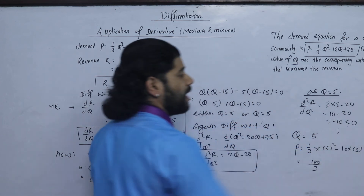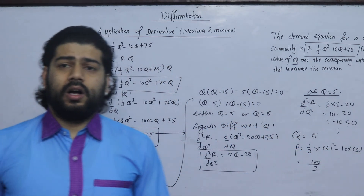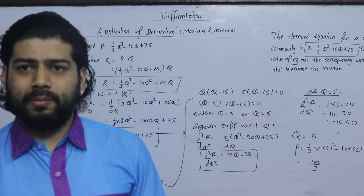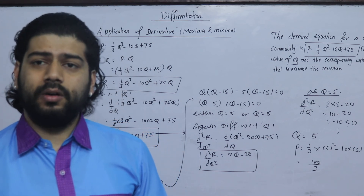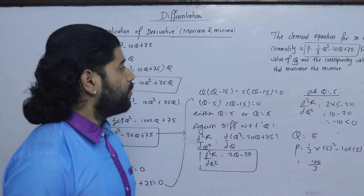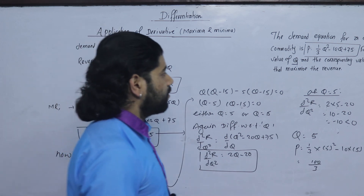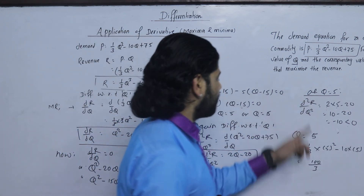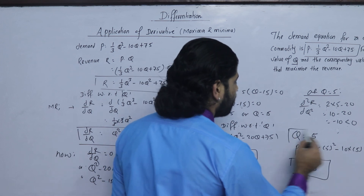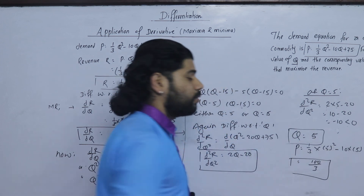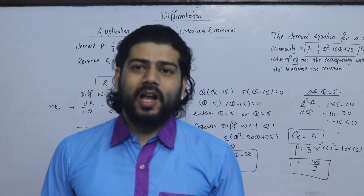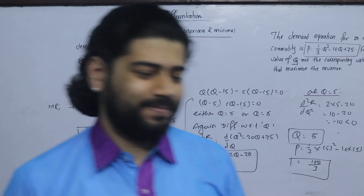The second order derivative at Q equals 15 gives 2(15) minus 20 equals 30 minus 20 equals positive 10, which is greater than zero — so Q equals 15 is a minimum. Therefore, revenue maximization occurs at Q equals 5 and P equals 100/3. Thank you.